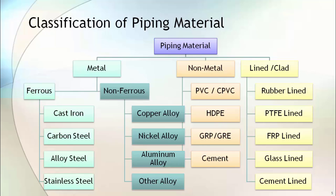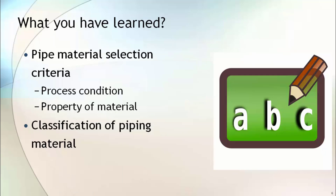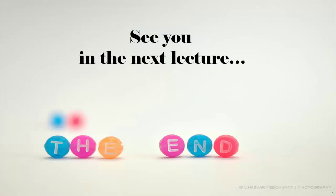In the next few lectures, you will learn in detail about these materials. In this lecture, you learned about piping material selection criteria and the conditions that affect the selection of material. You have also seen the chart of classification of material. See you in the next lecture.